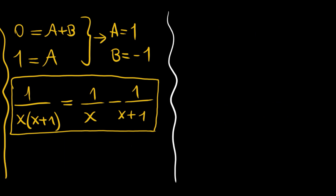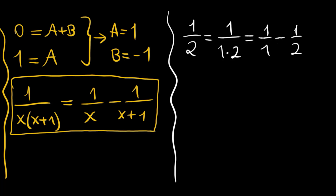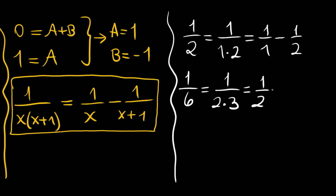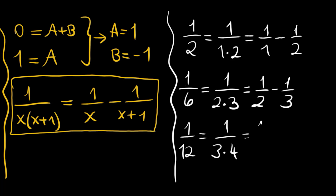Our first fraction is 1 over 2, which is 1 over 1 times 2. Using our rule, this equals 1 over 1 minus 1 over 2. The second one, 1 over 6, equals 1 over 2 times 3, which equals 1 over 2 minus 1 over 3. You can check. And likewise, 1 over 12 equals 1 over 3 times 4, which equals 1 over 3 minus 1 over 4.